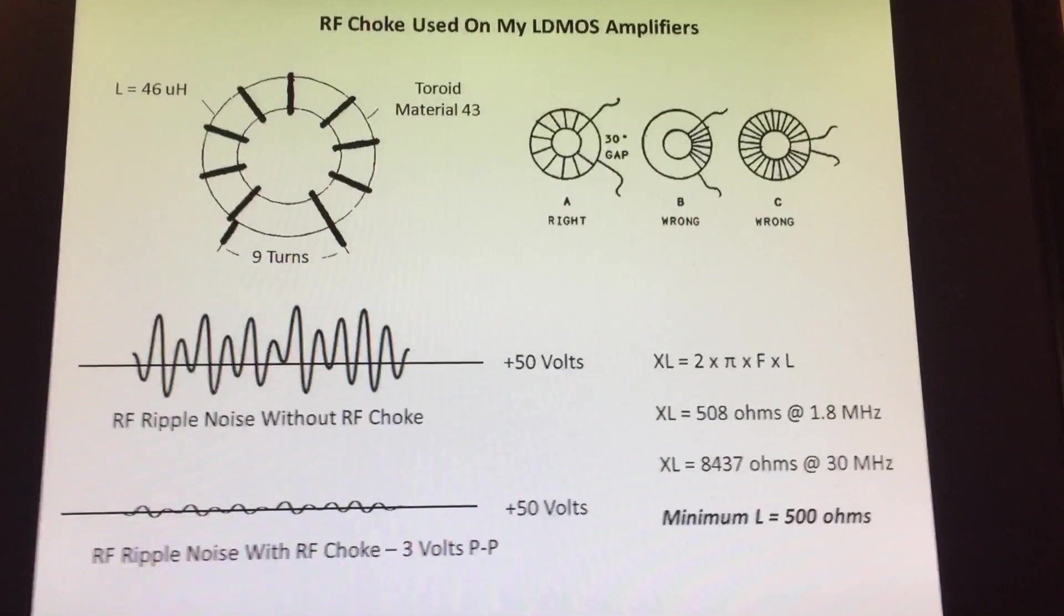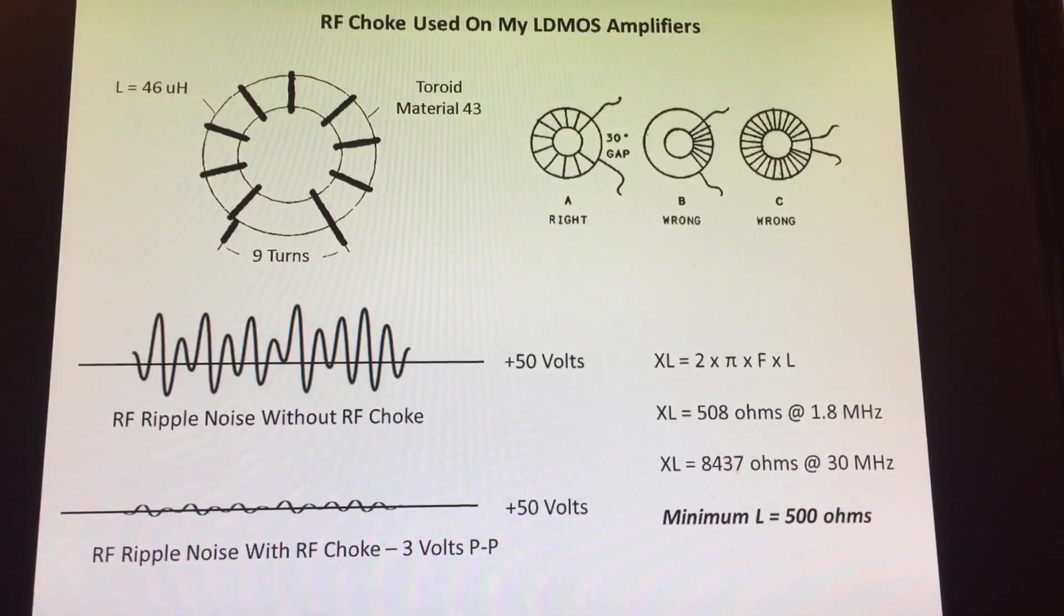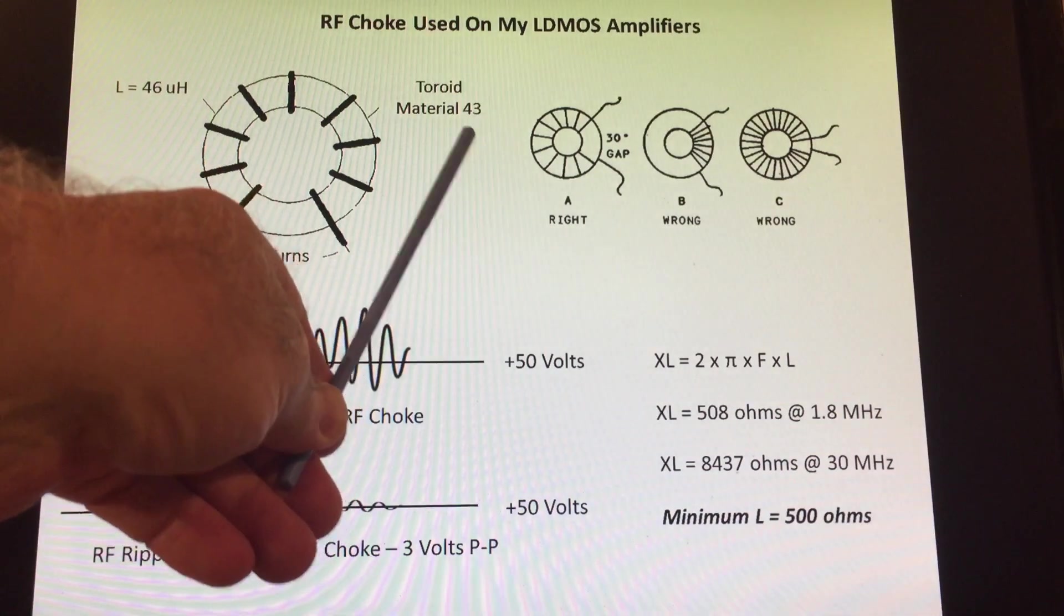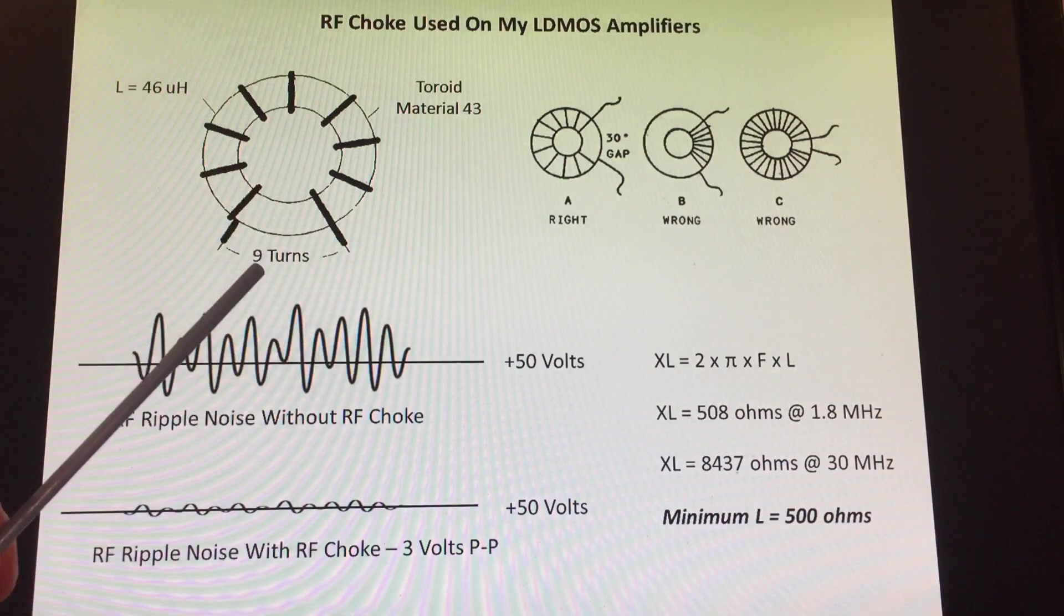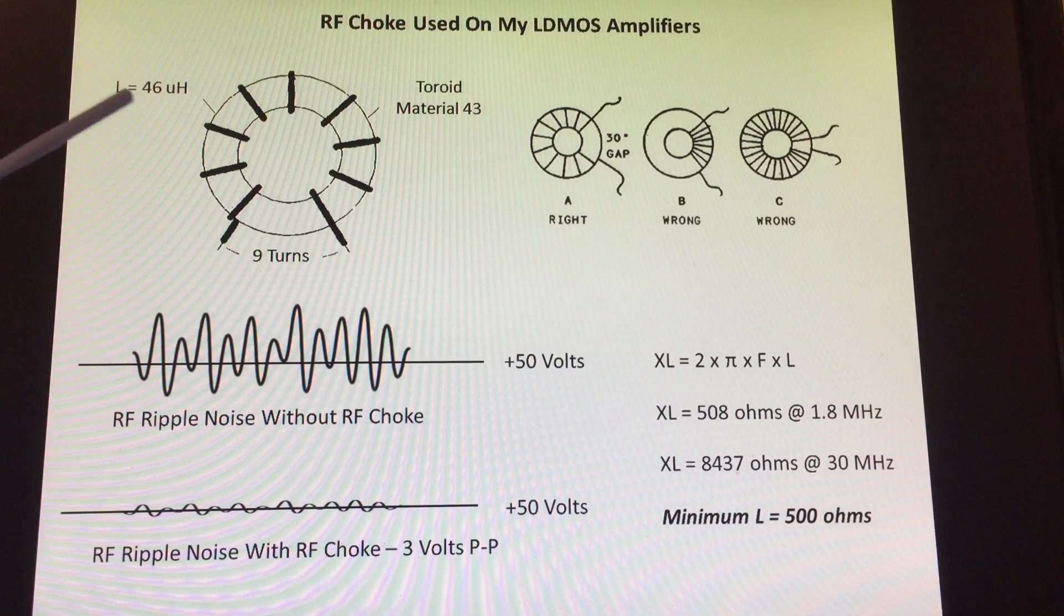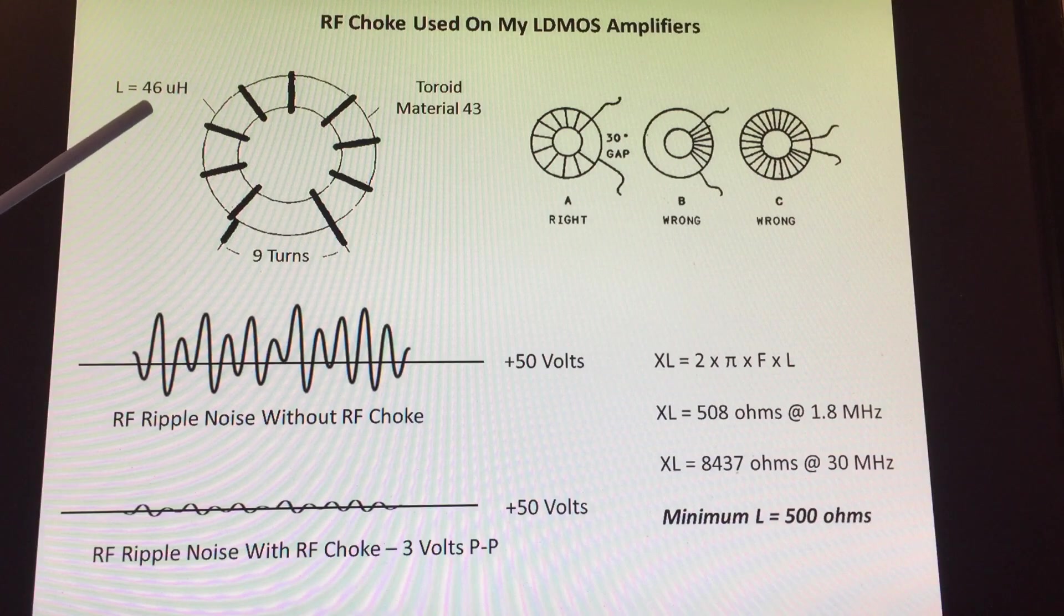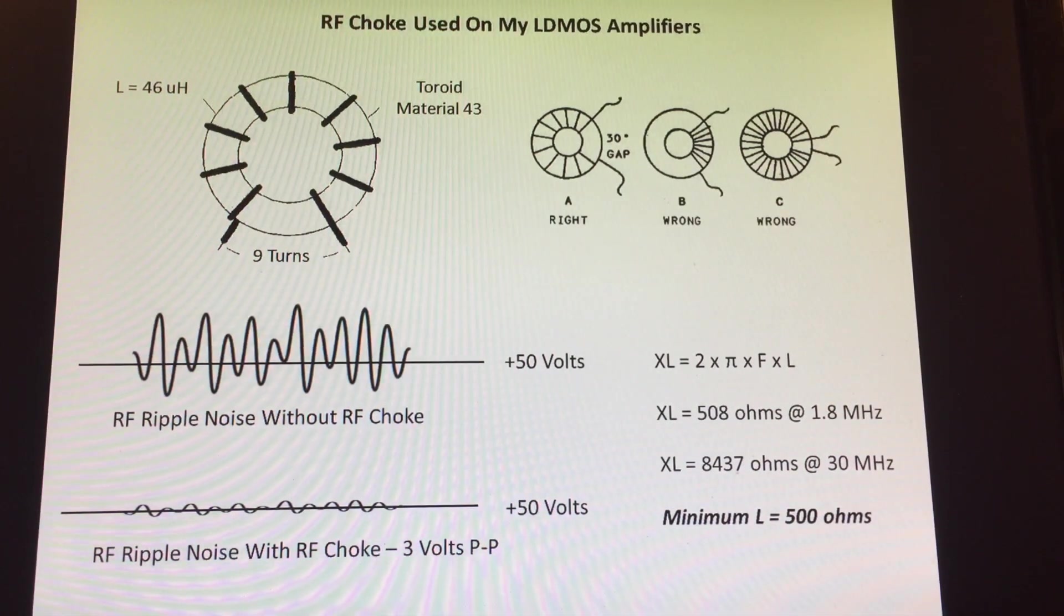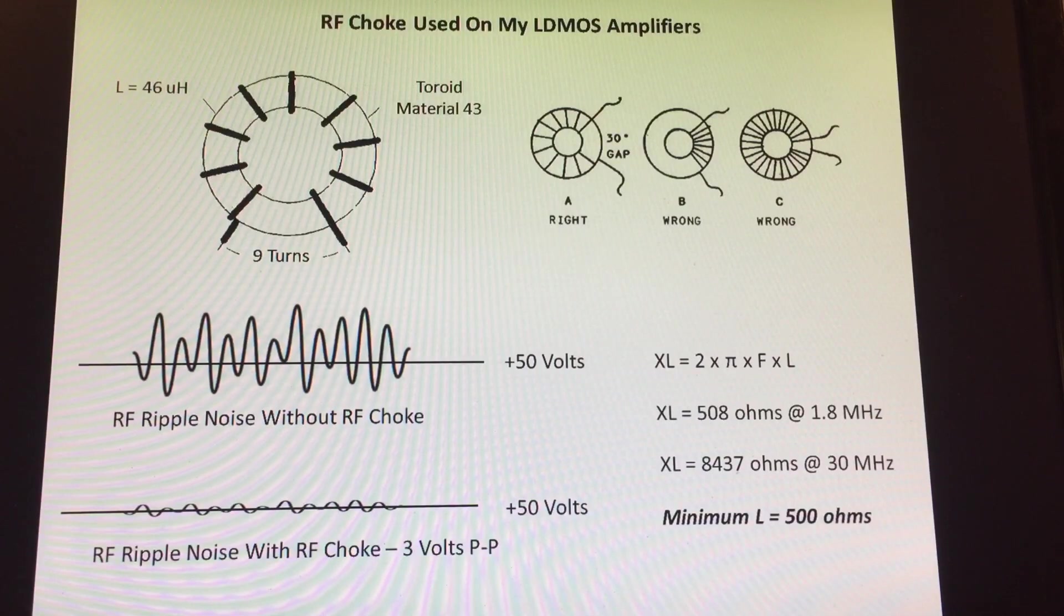This is the RF choke that I use on my LDMOS amplifiers. It's a one and a half inch toroid, it's the one I just showed, and I'm using material 43 with nine turns. At nine turns this gives me an inductance of 46 micro henries. Just a couple of comments before we explain how the choke works and why we use material 43 and why we're using nine turns.